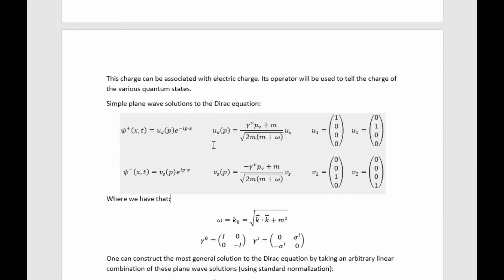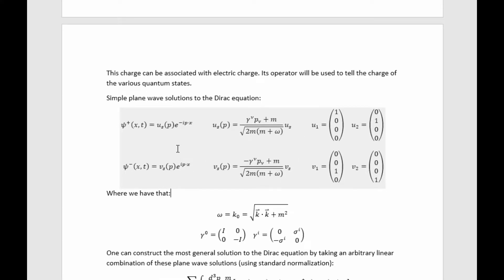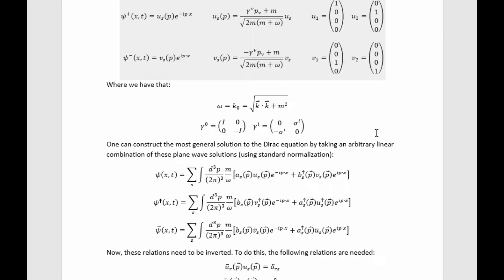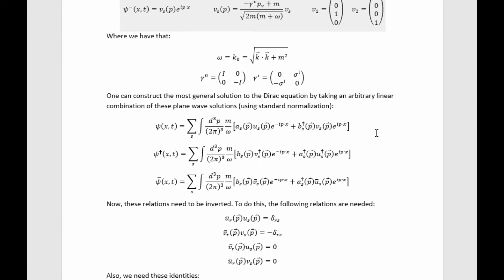From a previous video on plane wave solutions to the Dirac equation, these take on a form where s denotes spin — spin up or spin down — corresponding to U-s vectors and V-s vectors without the momentum argument. Using this standard relation and selecting the Dirac representation of the gamma matrices, one can construct the most general solution to the Dirac equation by taking an arbitrary linear combination of plane wave solutions. Using standard normalization we have this result, and we can take the Hermitian conjugate and multiply by gamma-zero from the right.